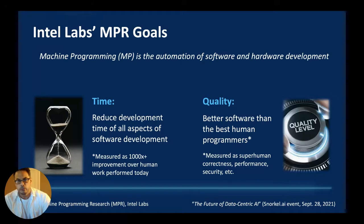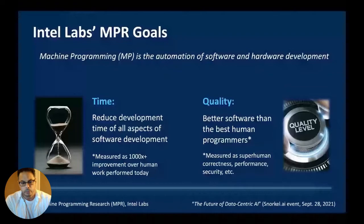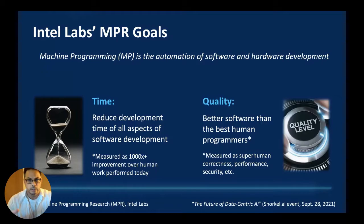The two core tenets of MPR break down into time and quality. Working toward automating software and hardware development, we want to achieve at least a 1000x improvement in programmer productivity — or what I now call 'software creators,' since I believe we'll move away from traditional programming toward allowing people who can't code to create software, similar to GitHub Copilot, where you use natural language comments and out pops a synthesized program that fulfills those semantics.